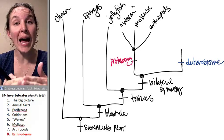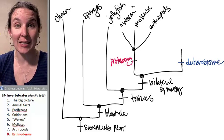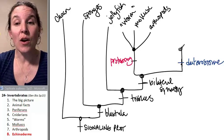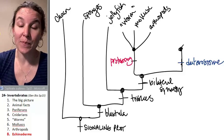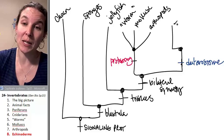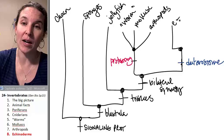Deuterostomes, the blastopore becomes the anus, and there are two groups of deuterostomes that we're going to look at. The first group, and we're going to spend a little bit of time right now talking about them, are echinoderms.